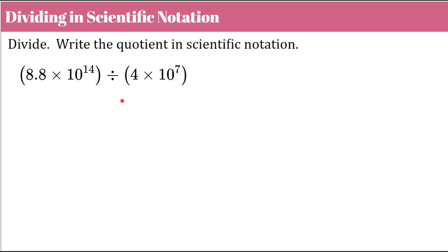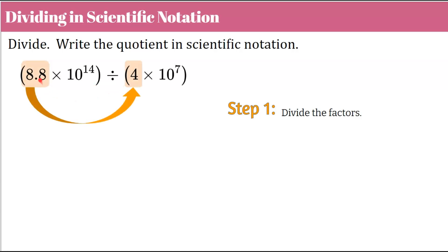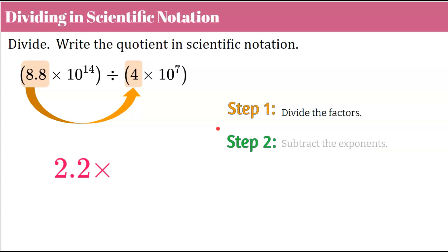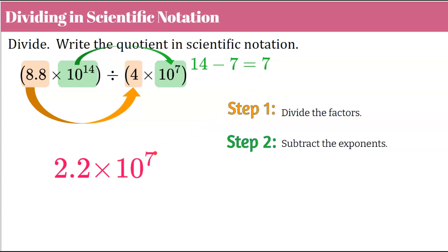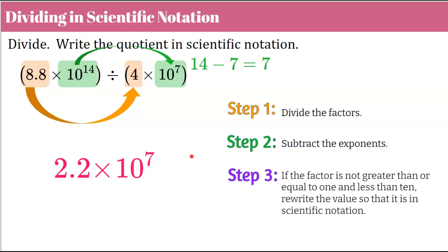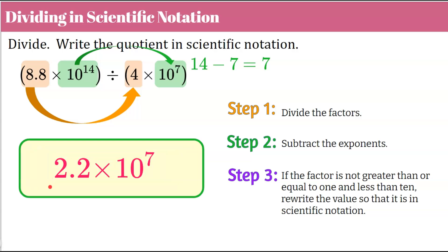To divide in scientific notation and write the quotient in scientific notation: step one, identify our factors and divide. 8.8 divided by 4 has a quotient of 2.2. Step two: apply exponent rules to the powers. When you divide powers with the same base, you subtract the exponents. 14 minus 7 equals 7, so our power is 10⁷. Step three: check — the leading digit to the left of the decimal is greater than or equal to 1 and less than 10. That value is in scientific notation.